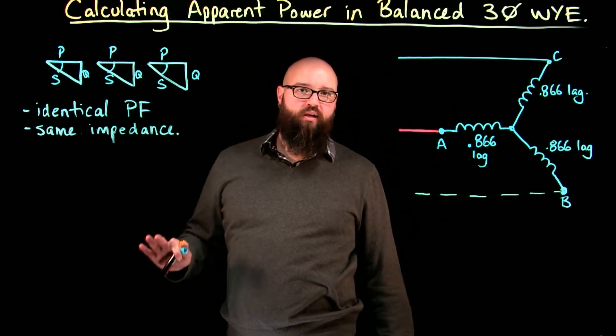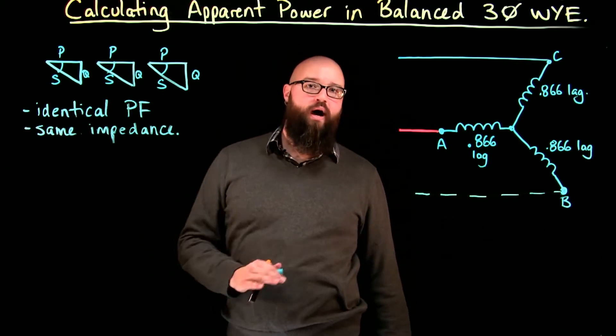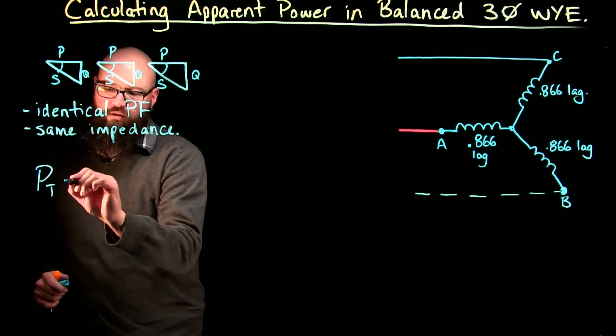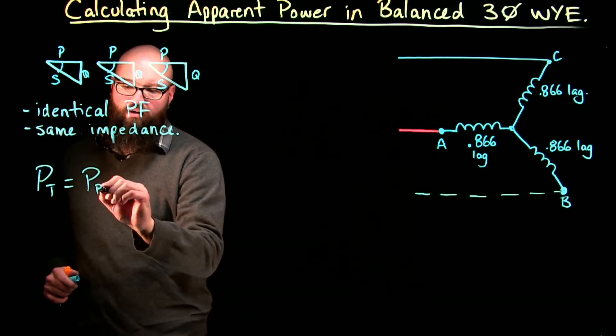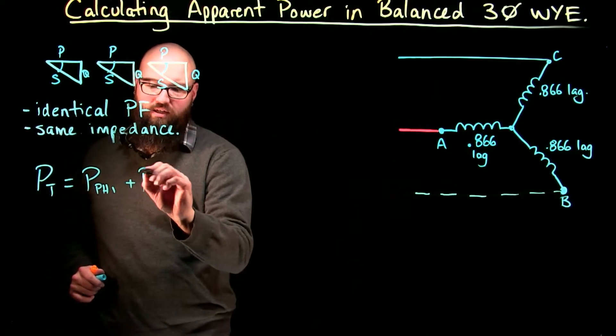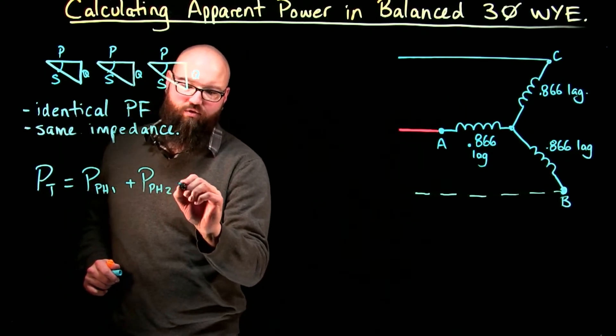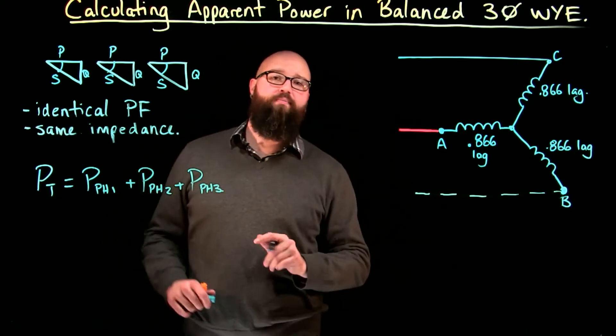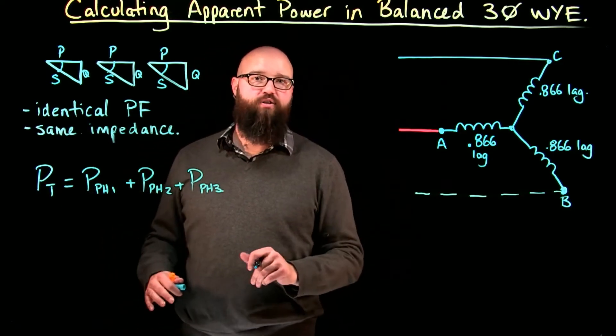The first thing we can say about calculating three-phase power in a balanced Y system is this. Power total is equal to the power of phase one plus power of phase two plus power of phase three. That will give us the power total of our entire circuit.